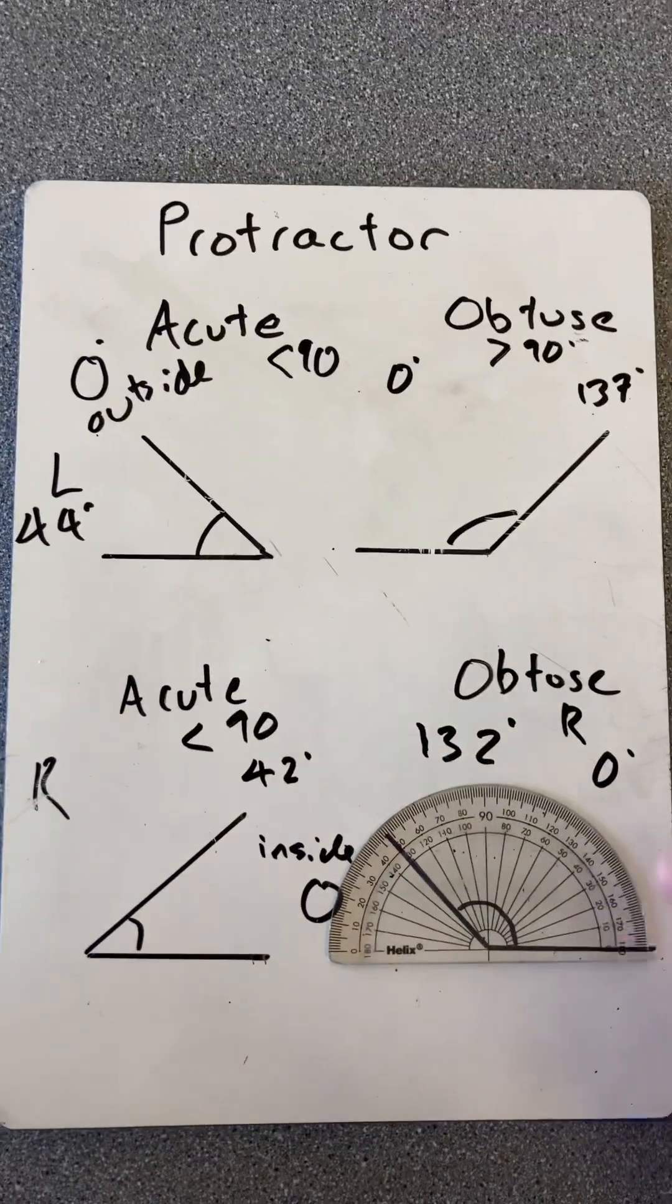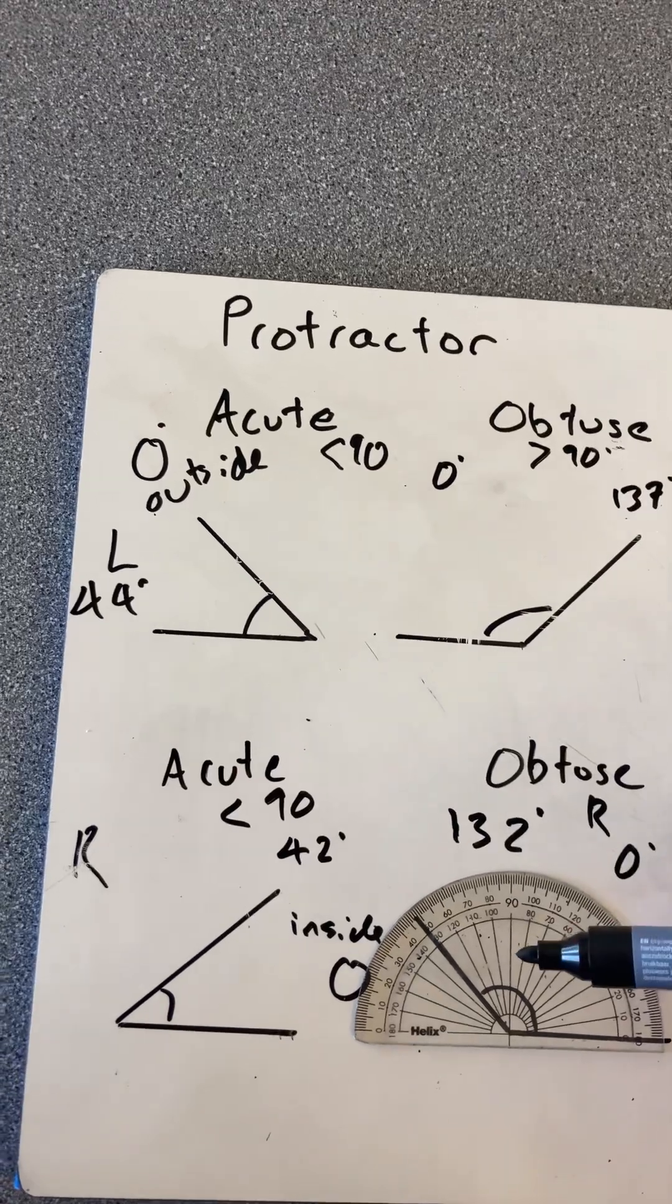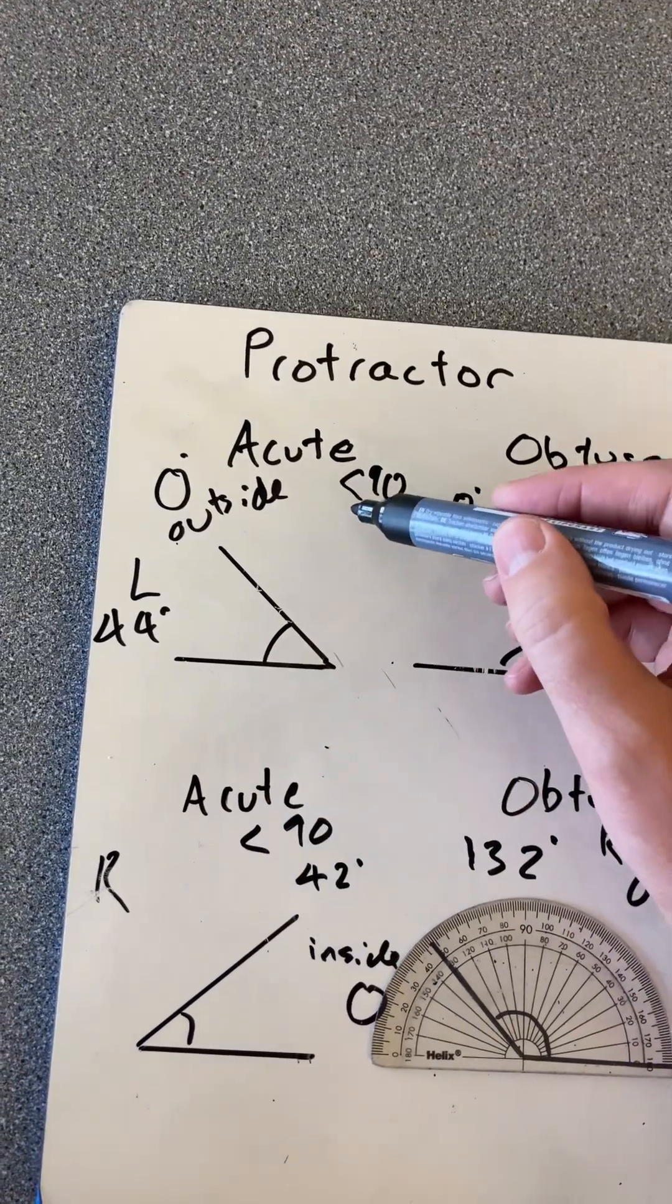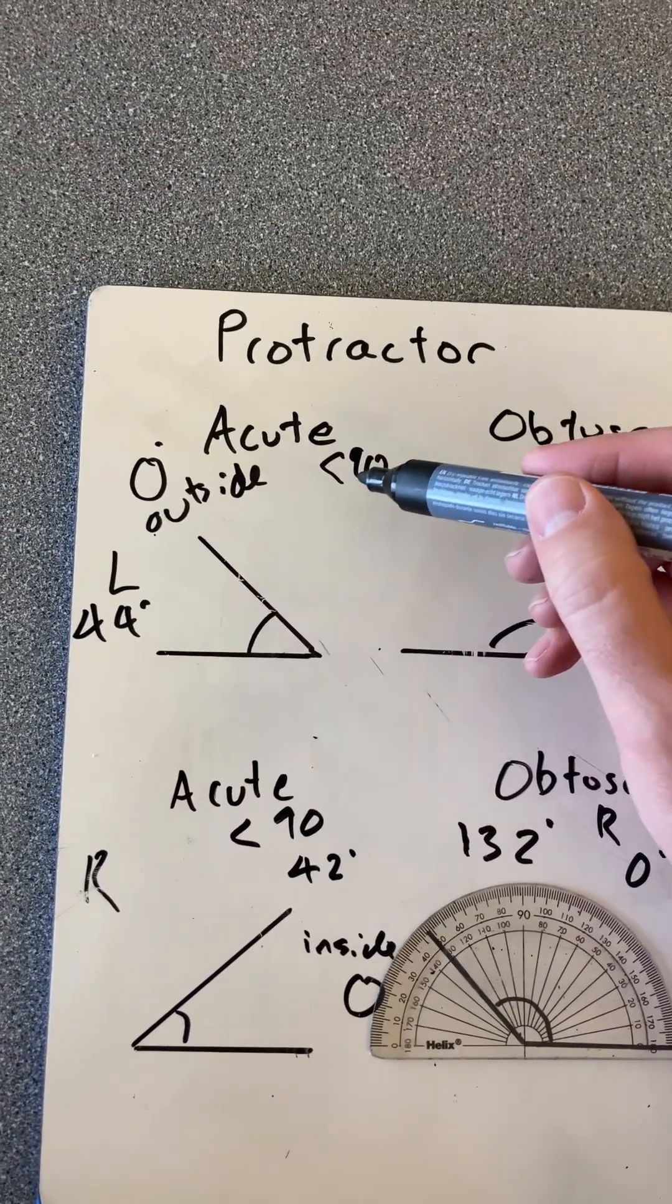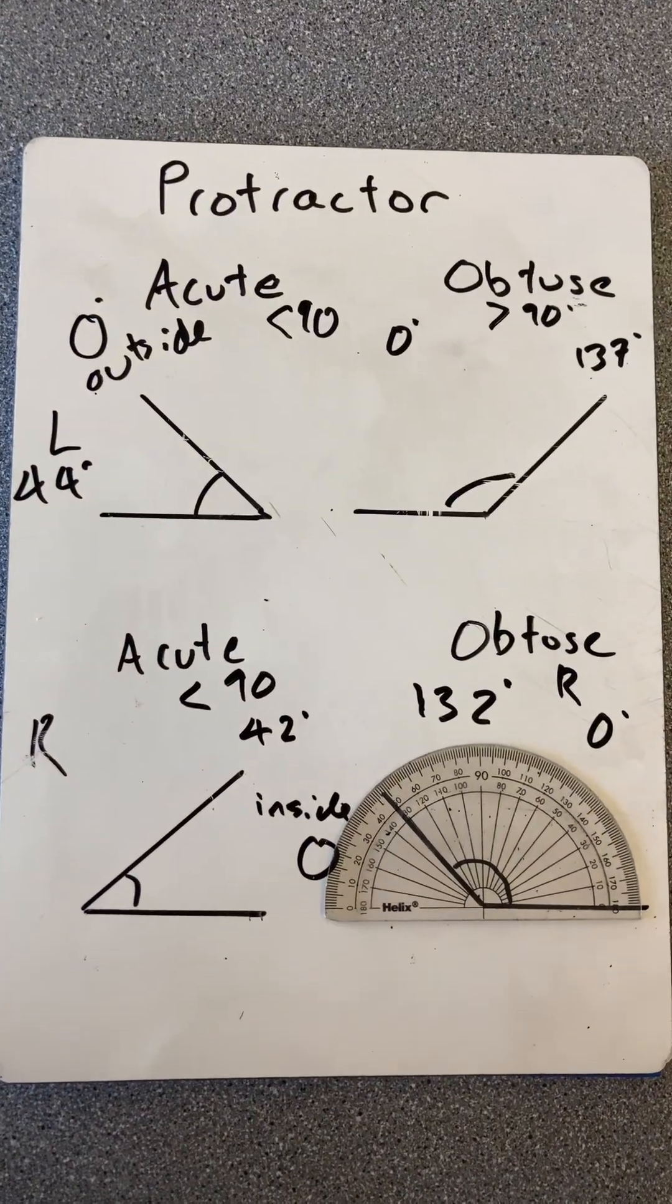Okay, so there you go. There's acute and obtuse on the left or the right. Just make sure you know which side you're reading, and always make sure you know what type of angle it is, whether it's less than or greater than 90 degrees. There you go. That's Mutt & Maths. Thanks for watching.